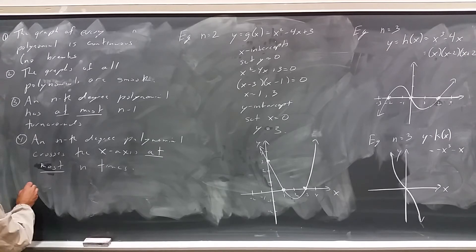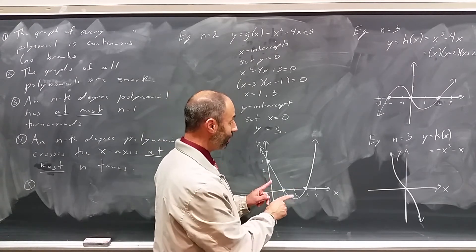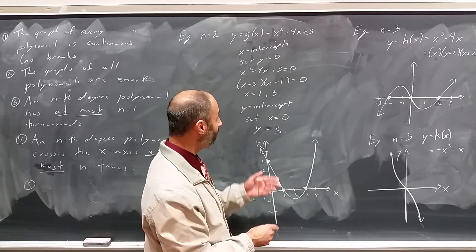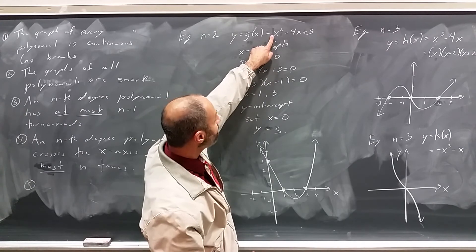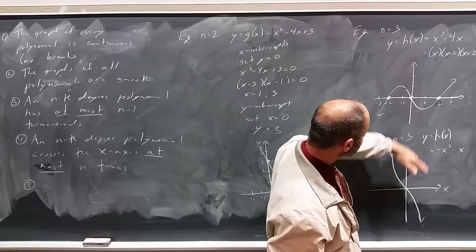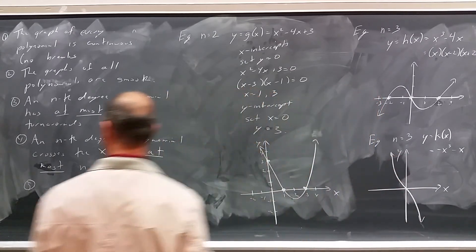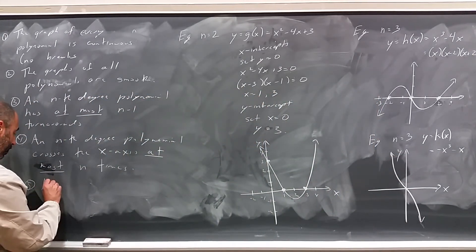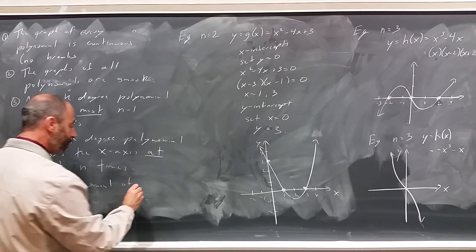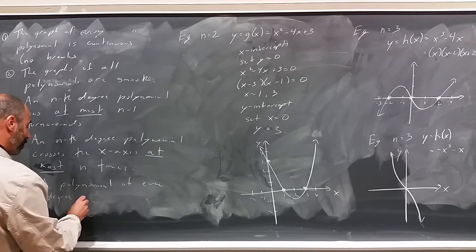And, in addition, we can talk about what sometimes is known as the end behavior of the graph. Notice that the parabola, this parabola goes uphill in both directions. And, of course, if we had a parabola where the leading coefficient was negative, that would go down in both directions. Whereas, this odd degree polynomial, both these odd degree polynomials go up in one direction and down in the other direction. That's typical of polynomials. So, a polynomial of even degree goes up in both directions or down in both directions.